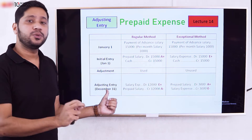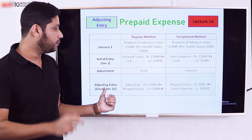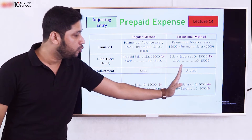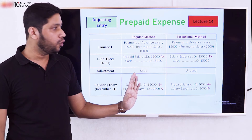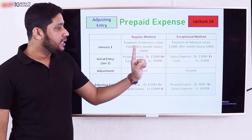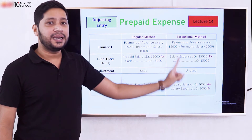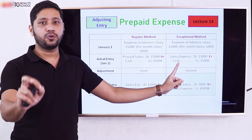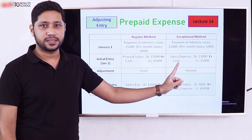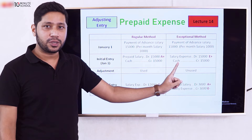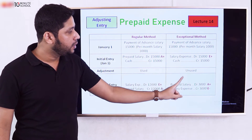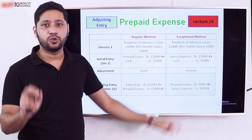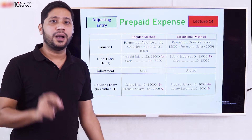On December 31st we apply this method. According to the accrual basis, the salary expense should definitely be $12,000. We check that the salary expense account already reflects $12,000, so the remaining balance is the prepaid portion.